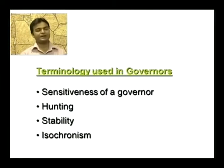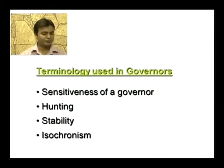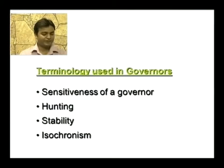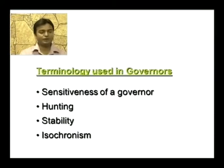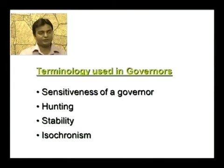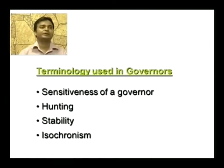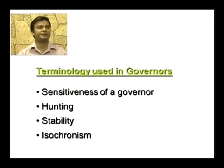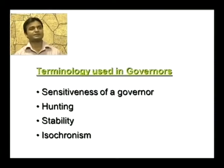Stability: a governor is said to be stable when, for every speed within the working range, there is a definite configuration — that is, there is only one radius of rotation of the governor balls at which the governor is in equilibrium. Such a governor is known as a stable governor.